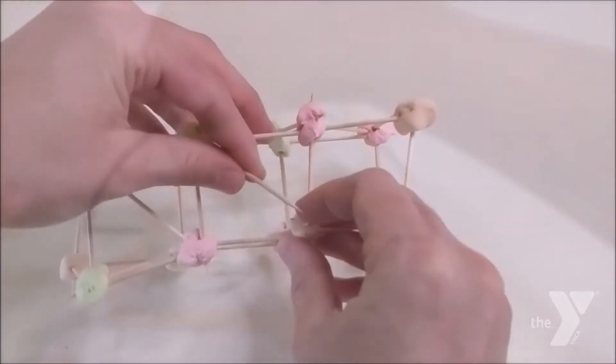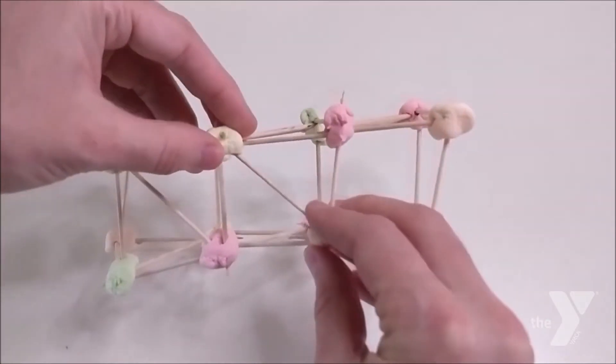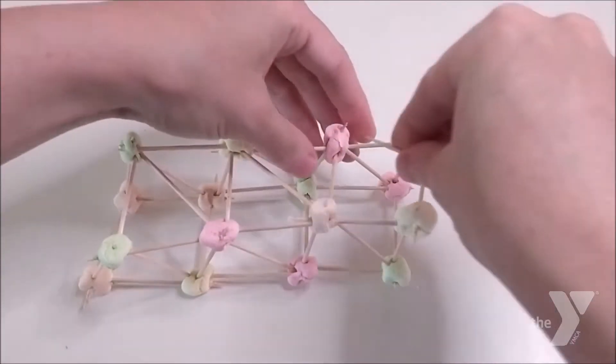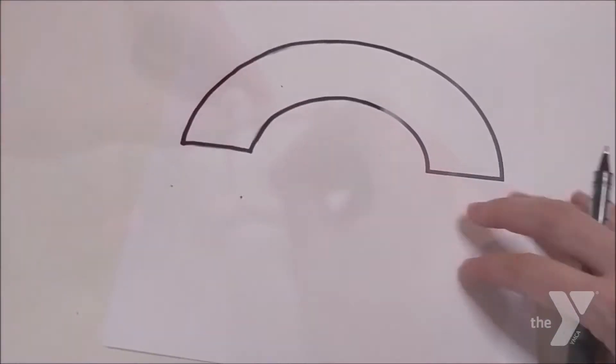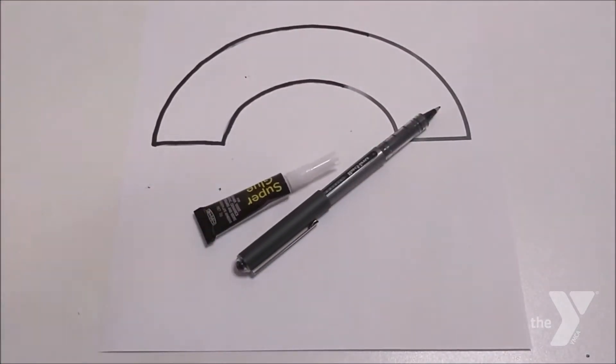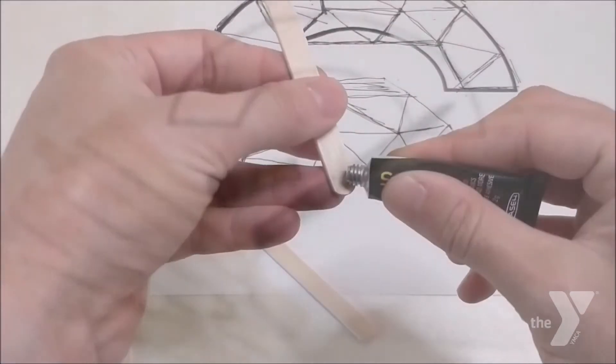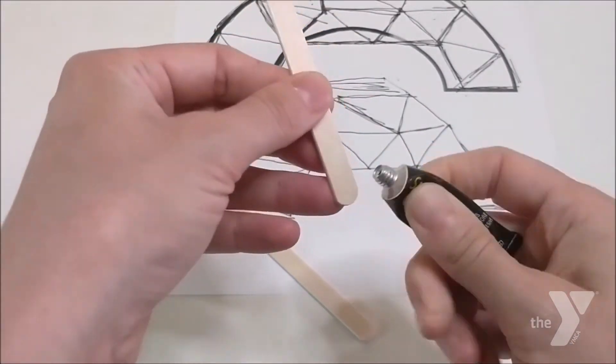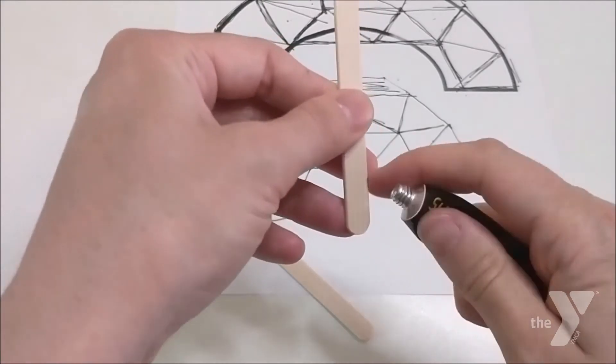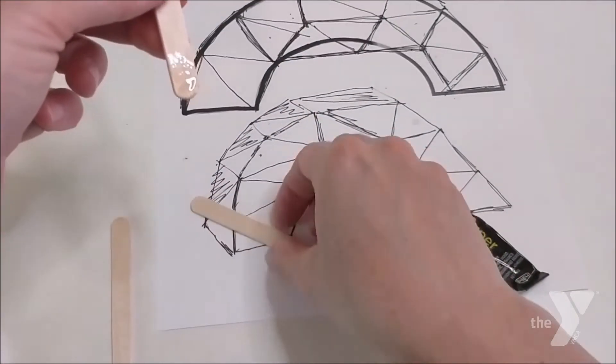But for today, we're going to work with marshmallows and toothpicks. So we're going to use these to build a prototype. A prototype is like a first draft of a structure, and it's designed to test the flaws and the weaknesses. And you'll be able to use what you learned there to actually design, draw, and then build your own bridge.